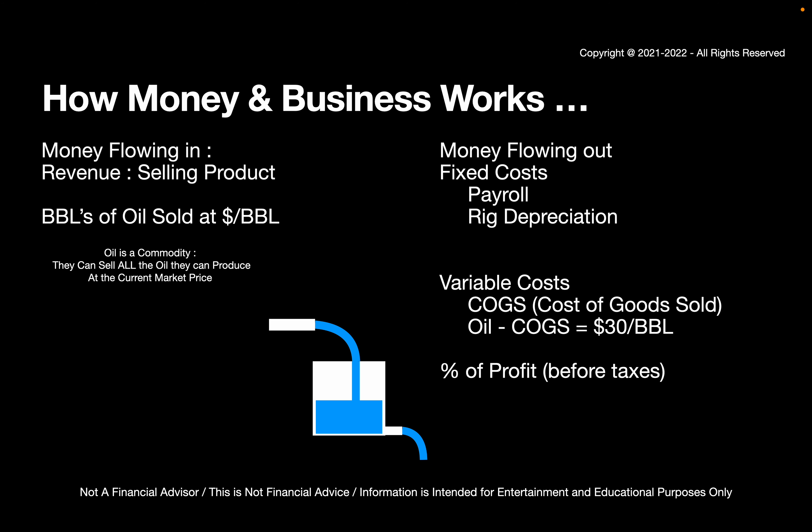For the case of oil, we can further categorize these topics. Starting with the right-hand side — money flowing out — we can categorize that into fixed costs and variable costs. Fixed costs include payroll, the regular paycheck employees receive, and rig depreciation: the oil rigs wear out over time and you have a depreciation schedule. In terms of variable costs, there's the amount of money it takes to extract oil out of the ground — that's called COGS, or cost of goods sold — which is about $30 a barrel. Another variable cost is the percentage of profit you'll pay before taxes.